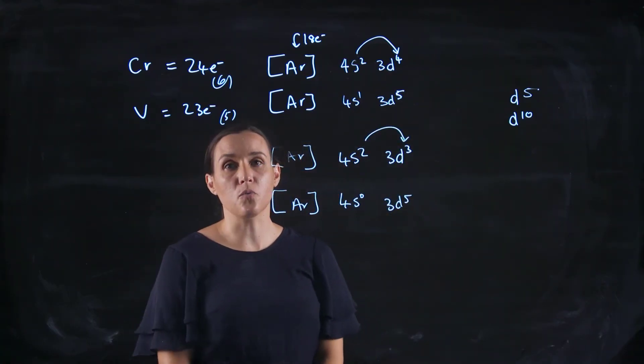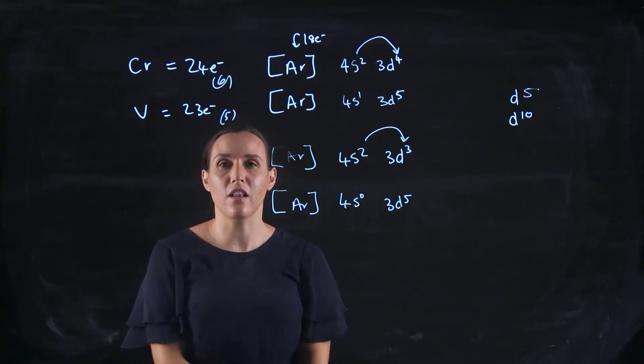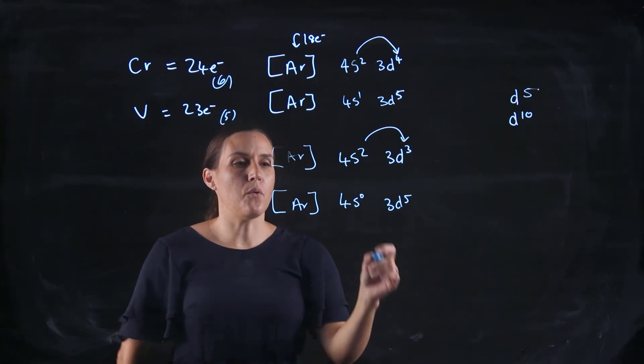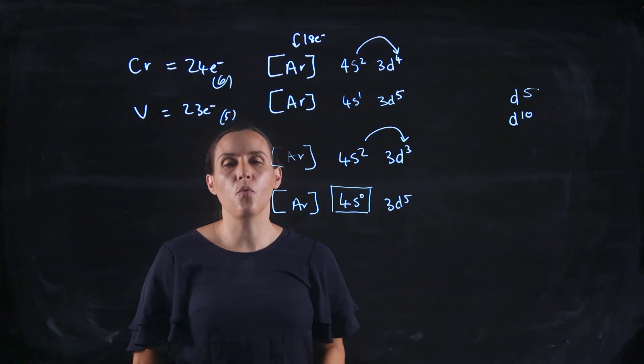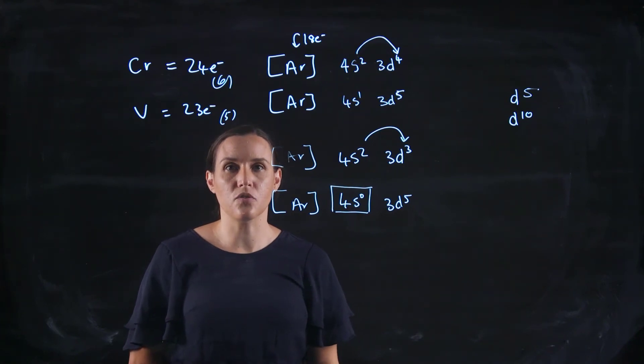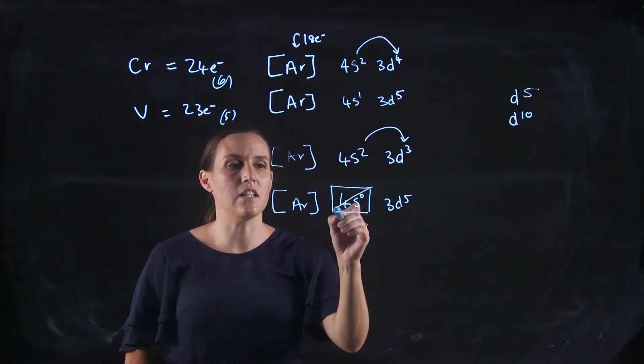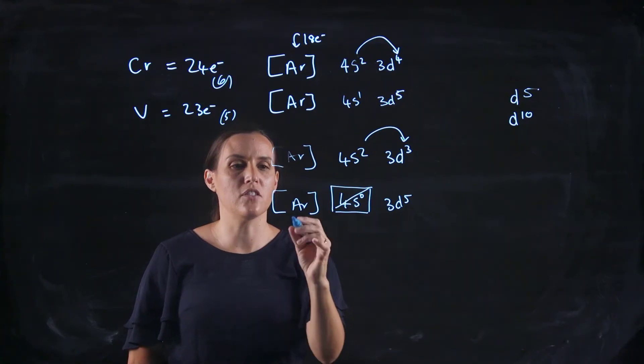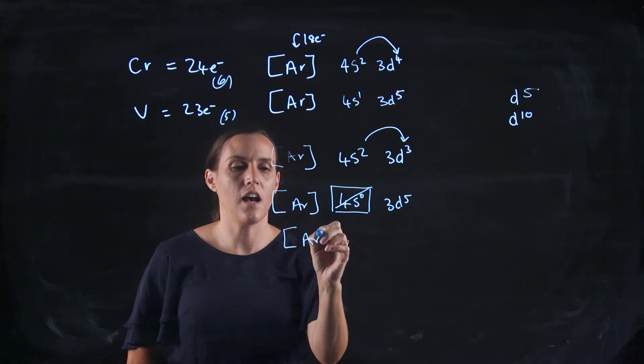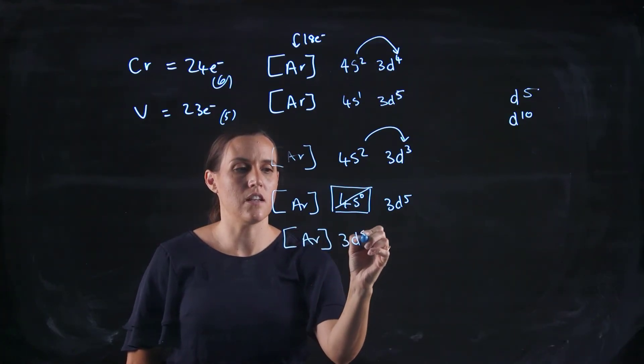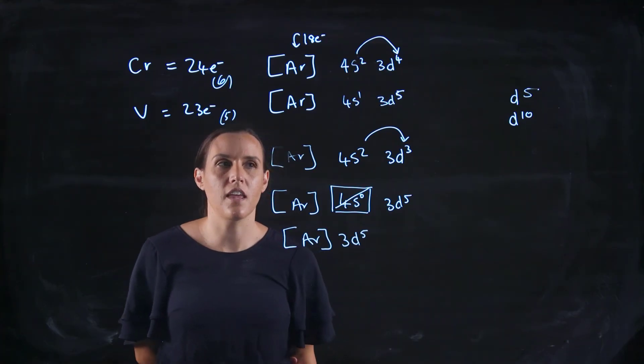And that promotion will overall give it a lower energy. Now with the 4s0, whether or not I write that in, that's optional. So I don't need to account for that. I could just write argon 3d5 and that would be your answer.